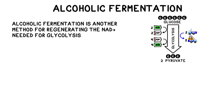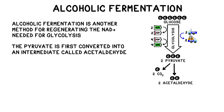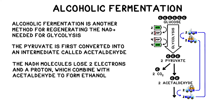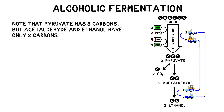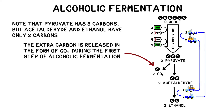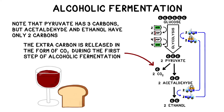Alcoholic fermentation is another method for regenerating the NAD+ needed to keep glycolysis going. In alcohol fermentation, the pyruvate from glycolysis is first converted into an intermediate compound called acetaldehyde. In the second step, the two NADH molecules each lose two electrons and a proton, which combine with the acetaldehyde to form a type of alcohol called ethanol. Because the acetaldehyde accepts the electrons, it's considered to be the final electron acceptor in alcoholic fermentation, and NADH is oxidized back into NAD+. Notice how pyruvate had three carbons, but acetaldehyde and ethanol only have two carbons — the extra carbon is released as carbon dioxide during the first step. This CO2 gives beer and champagne their fizzy bubbles and is also what causes bread to rise.